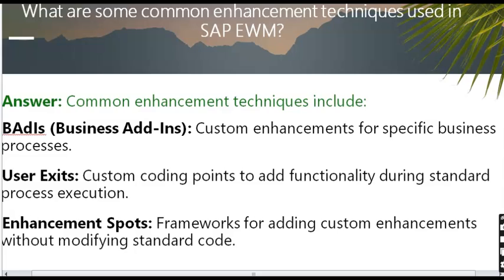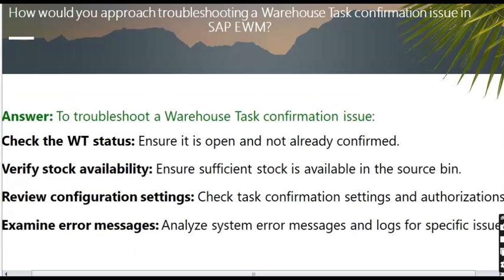What are some common enhancement techniques used in SAP EWM? Common enhancement techniques include Business Add-ins for custom enhancement for specific business processes, User Exits as custom coding points to add functionality during standard process execution, and Enhancement Spots as frameworks for adding custom enhancements without modifying standard code.